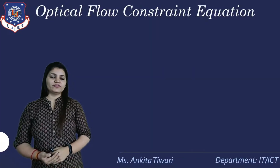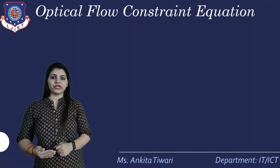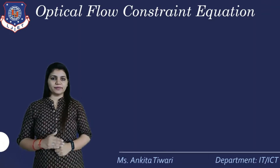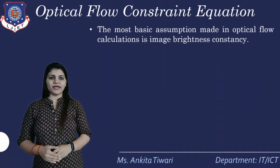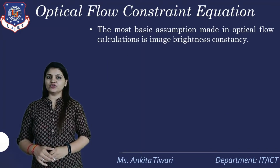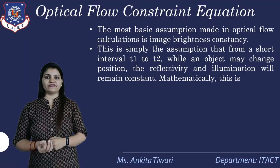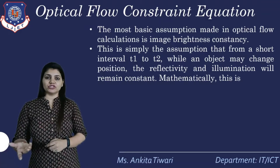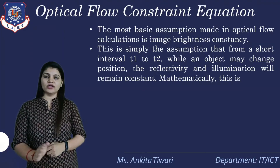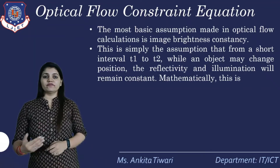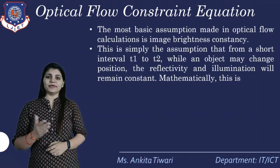Moving forward, optical flow has already been discussed in the last lecture, including the various equations. Today we are going to revisit the optical flow constraint equation. The most basic assumption made in optical flow calculations is image brightness consistency — the assumption that from a short interval T1 to T2, while an object may change position, its reflectivity or illumination will remain constant.